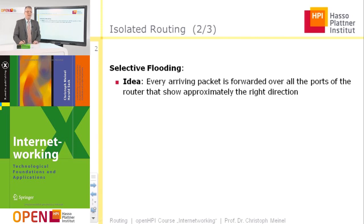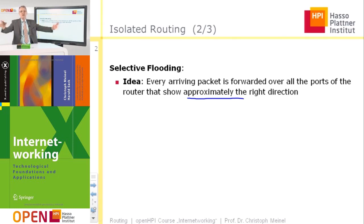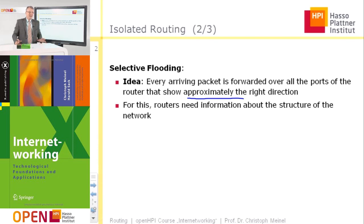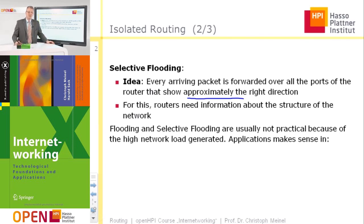With selective flooding, one tries to address the biggest disadvantage of flooding — the high number of packet multiplications. The idea is that every arriving packet is forwarded only over those ports that point approximately in the right direction, not over all other ports. Compared to simple flooding, for selective flooding the router needs some information about the structure of the network to determine the right direction. So selective flooding is more complicated, but the multiplication and creation of transportation demand is decreased.